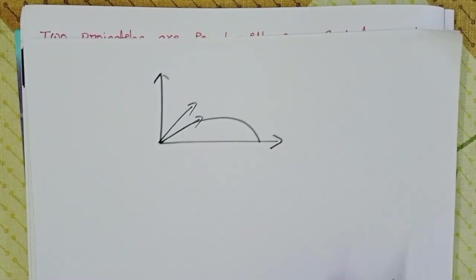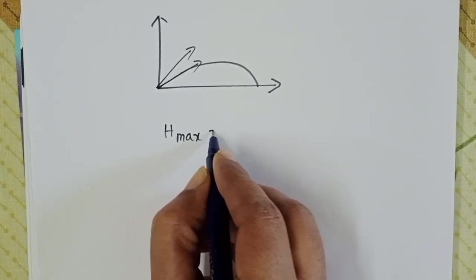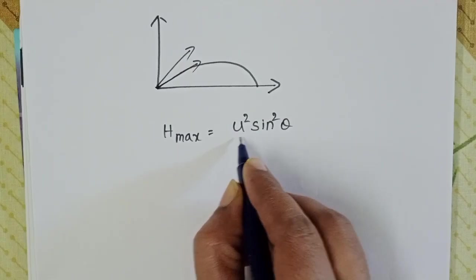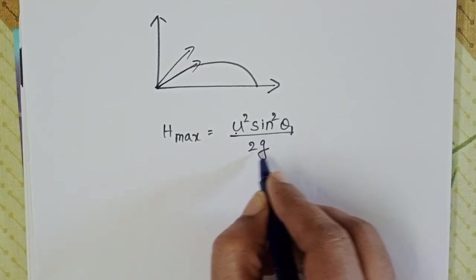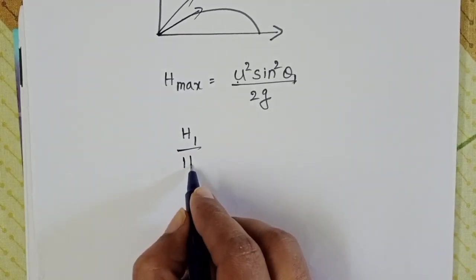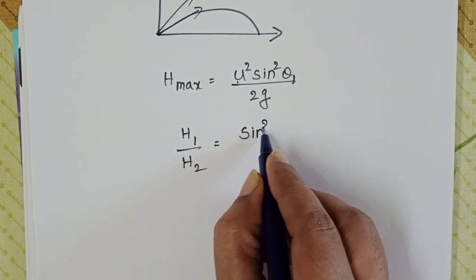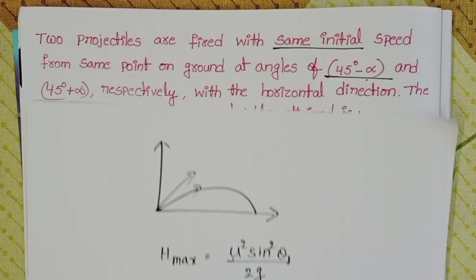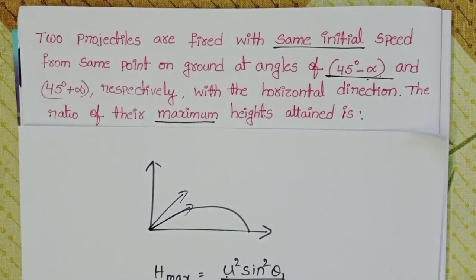Maximum height formula: H maximum equals U squared sine squared theta by 2G. Here initial speed and 2G are constant. Ratio of their maximum heights H1 by H2 equals sine squared theta 1 by sine squared theta 2. First projectile angle is 45 degrees minus alpha, second one is 45 degrees plus alpha.